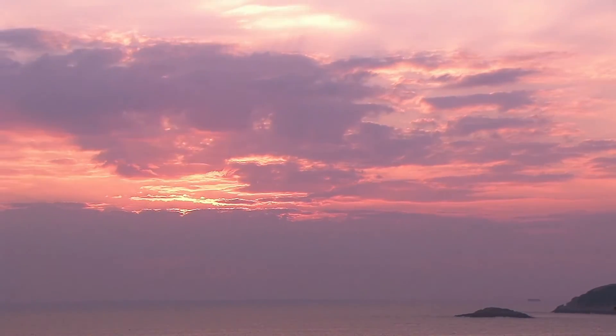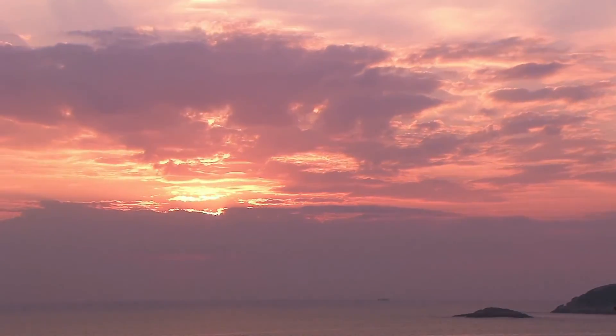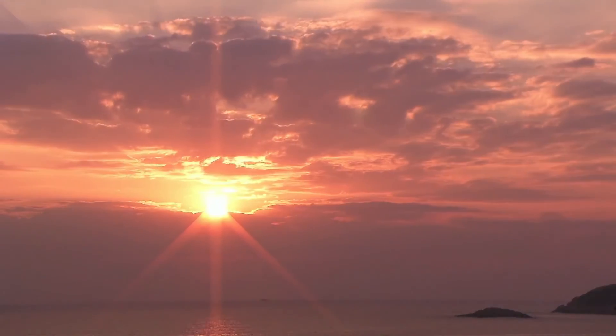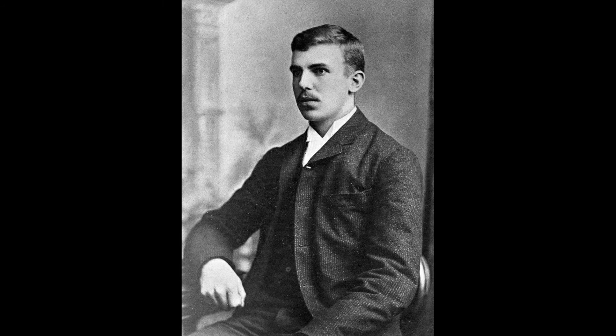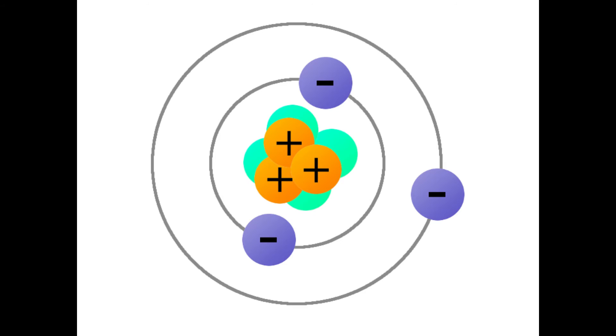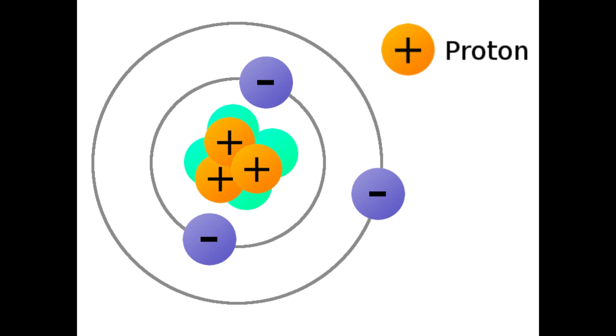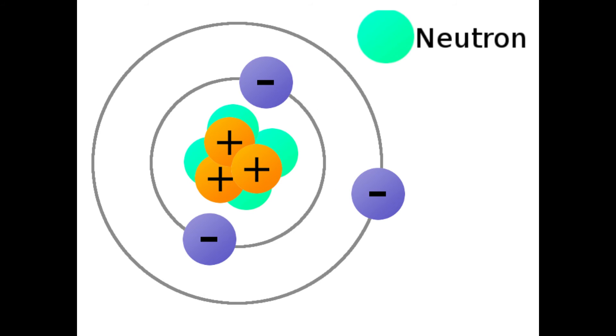Dalton's atomic theory had a few shortcomings and had to be modified. In the mid to late 1800s, English physicist J.J. Thomson and his protégé Ernest Rutherford disproved Dalton's idea that the atom could not be further divided, as their experimental contributions were pivotal in identifying the subatomic particles known as protons, neutrons, and electrons.